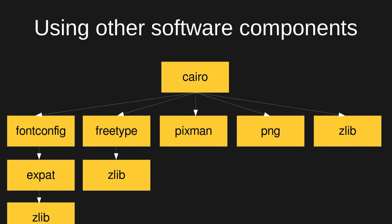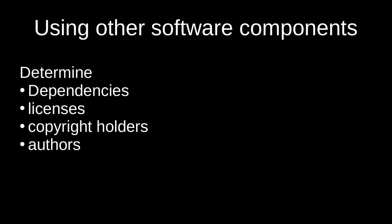For local development you just have to look at Cairo and see, oh, it uses fontconfig, then look at the fontconfig repository and see, oh, it uses expat — something like that. Unless you have a build system like Yocto that does all of that for you, which is great. And once we've found the dependencies, we need to look into the licenses.